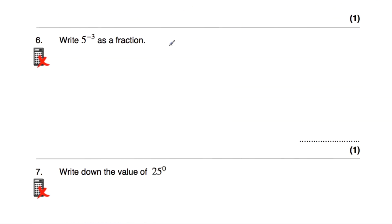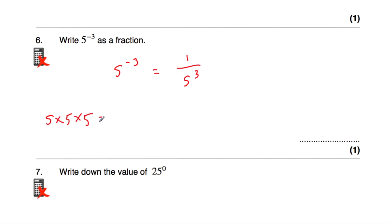Question 6: work out 5 to the power of negative 3 as a fraction. That equals 1 over 5 cubed. 5 times 5 times 5: 5 times 5 is 25, times 5 is 125. So the answer is 1 over 125. We just do 1 over the positive power and then work that out.